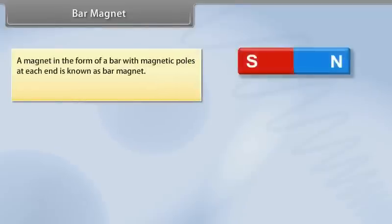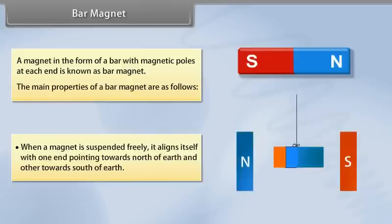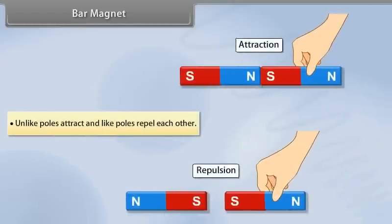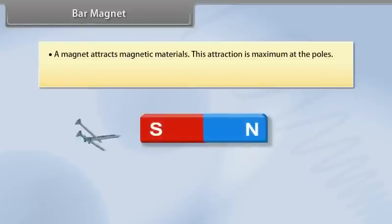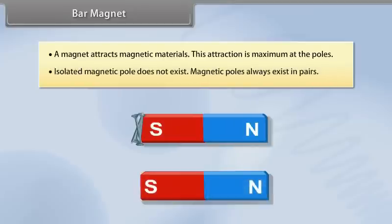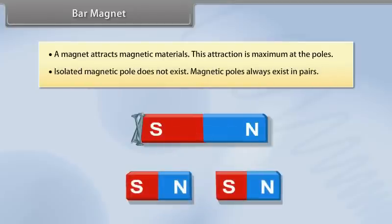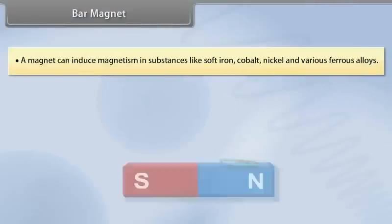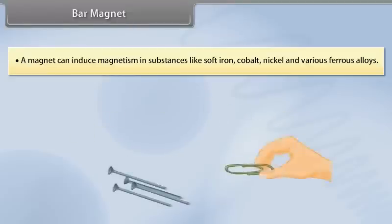Bar Magnet: A magnet in the form of a bar with magnetic poles at each end is known as a bar magnet. Its main properties are: when suspended freely, it aligns with one end pointing towards the north of earth and the other towards the south. Unlike poles attract and like poles repel each other. A magnet attracts magnetic materials, with maximum attraction at the poles. Isolated magnetic poles do not exist — magnetic poles always exist in pairs. A magnet can induce magnetism in substances like soft iron, cobalt, nickel, and various ferrous alloys.